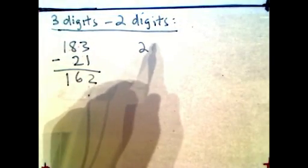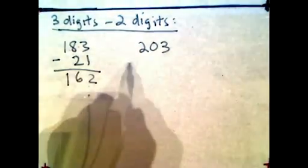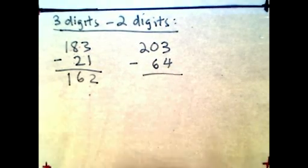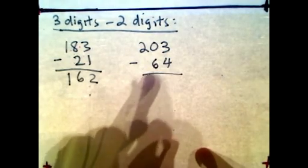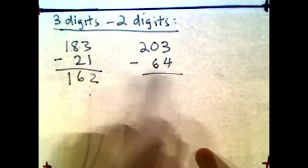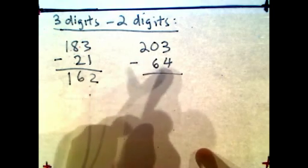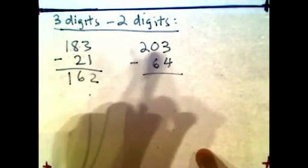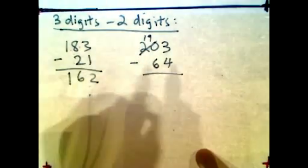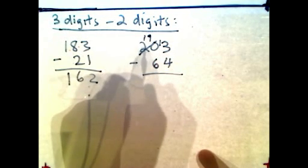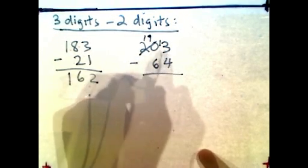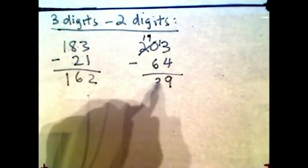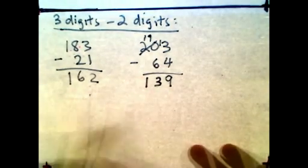Here's another one: 203 minus 64. This is a bit tricky — 4 is bigger than 3, so we need to borrow. Since the tens digit is 0, we borrow from the 20, which becomes 19. That 10 we borrowed makes the ones column 13. 13 minus 4 is 9. Now 9 minus 6 gives you 3, and you have 1 left. So the answer is 139.